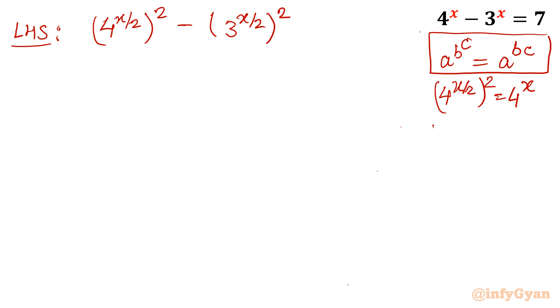Now difference of square formula. A square minus b square, we know, a plus b, a minus b. So I will write, before that you should consider this is a, this is b. So it will be a plus b and a minus b. As we know 7 is prime number. So we can factorize this 7 as 1 times 7 and 7 times 1.